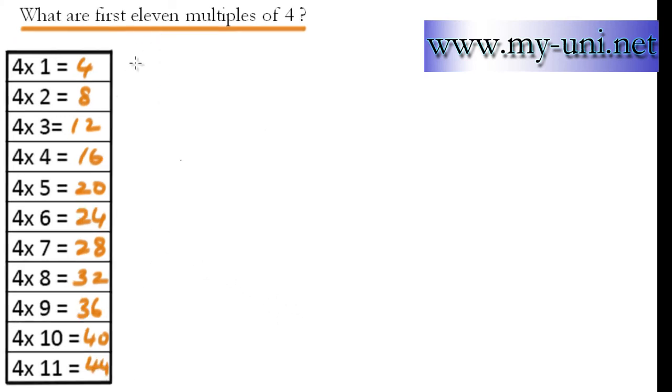The next thing you need to note is that the numbers are going up by 4 every time you go to the next multiple. So 4 plus 4 is 8, 8 plus 4 is 12, 12 plus 4 is 16, 16 plus 4 is 20, 20 plus 4 is 24.